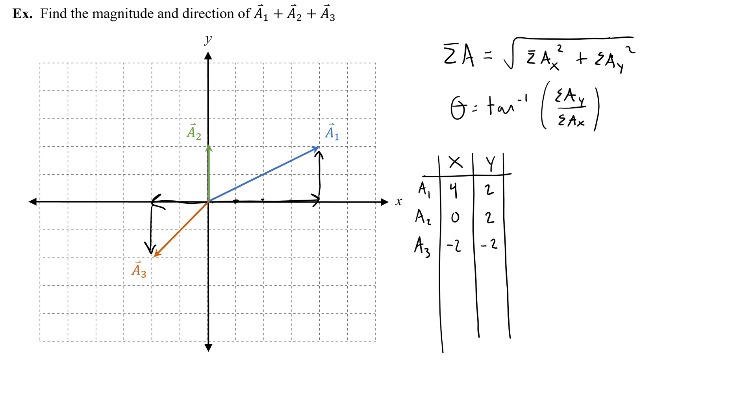Now I'm going to figure out the sum of those x's. So the sum of the x components is 4 plus negative 2 or 2. The sum of the y components is 2 plus 2 plus negative 2 or 2. So now I've figured out the x and the y component of my resultant.